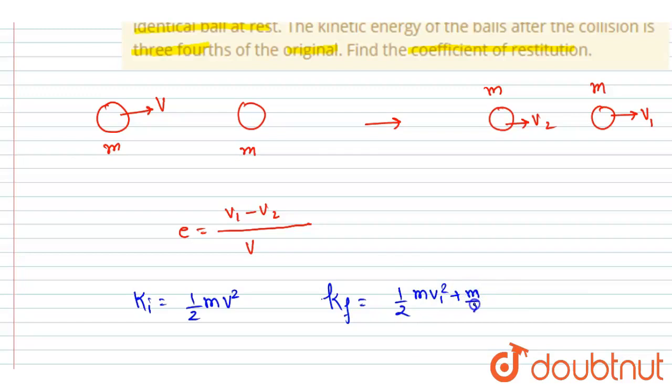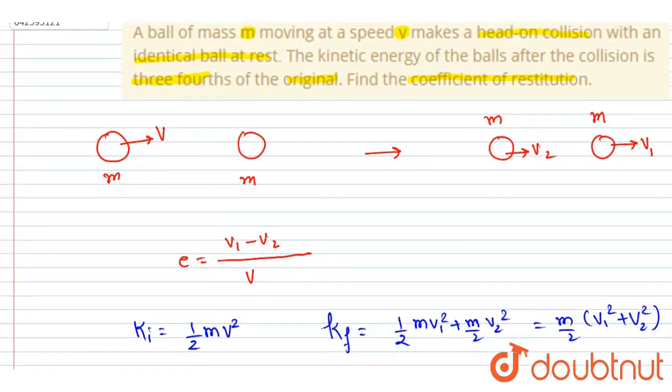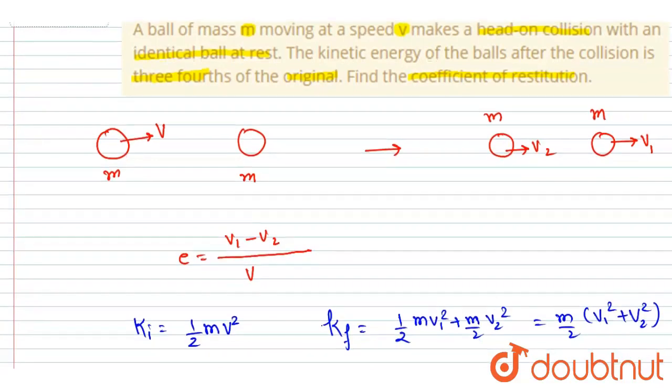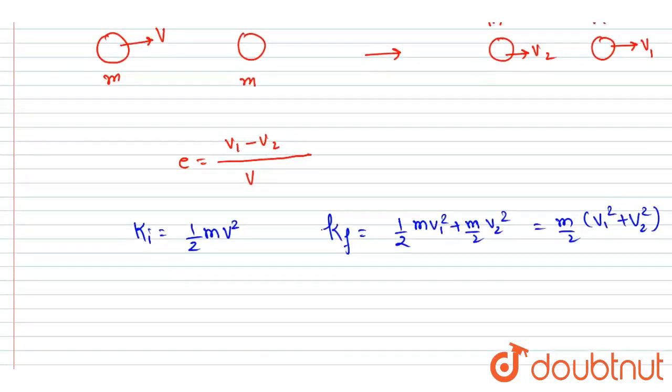So I will take m by 2 common here, so I will get m by 2 times v1 squared plus v2 squared. Now it is said in the question that the kinetic energy of the ball after the collision is 3 by 4th of the original. So 3 by 4th of the original means 3 by 4th of this quantity. So I will put...